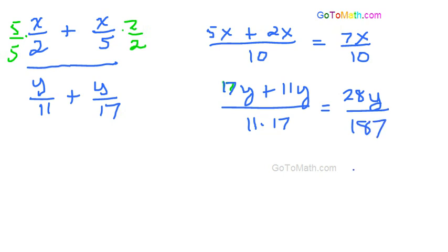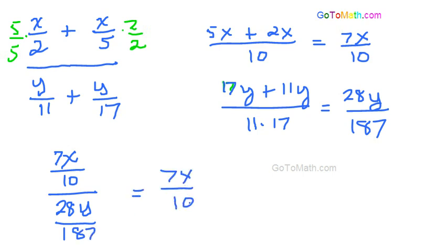187. There you go. Alright. So let's rewrite this over here. We have 7x over 10 and that's all over 28y over 187. So we have 7x over 10. Now we're going to write multiplication, flip this fraction, 187 over 28y.